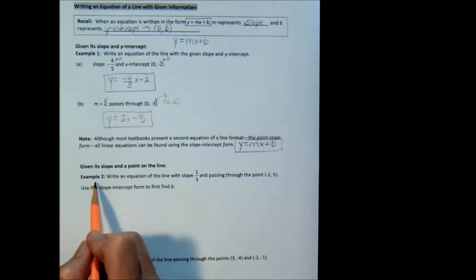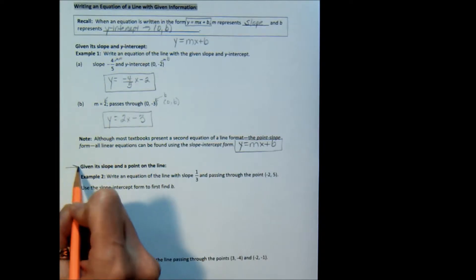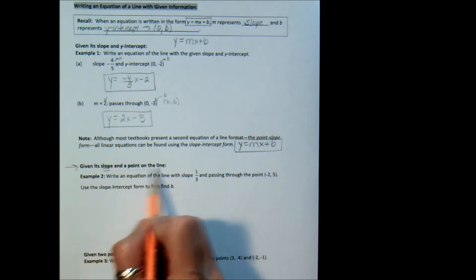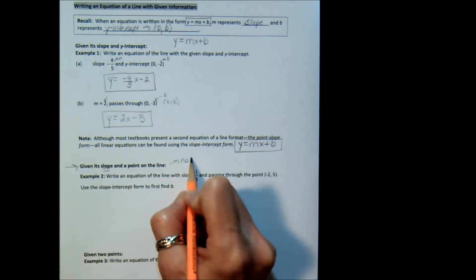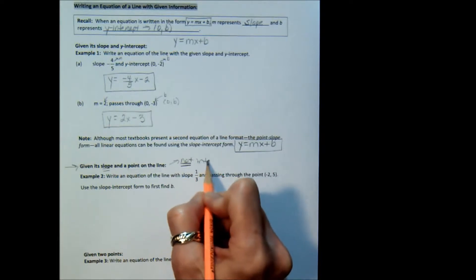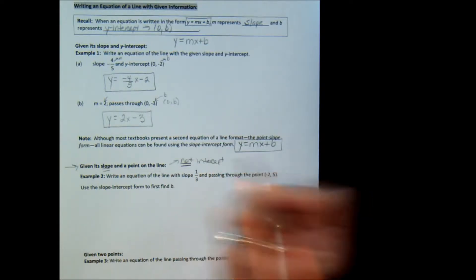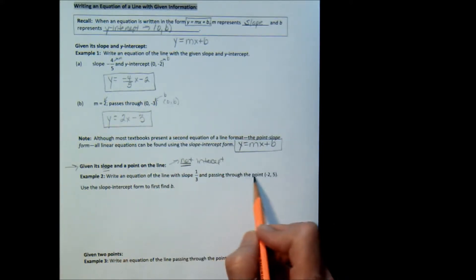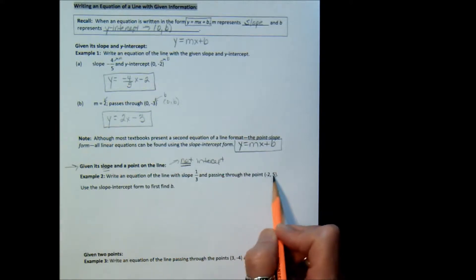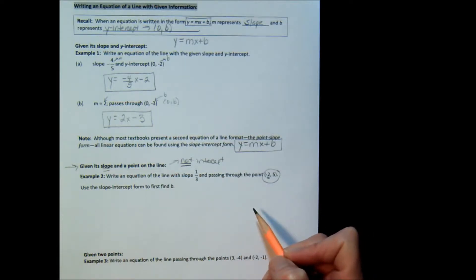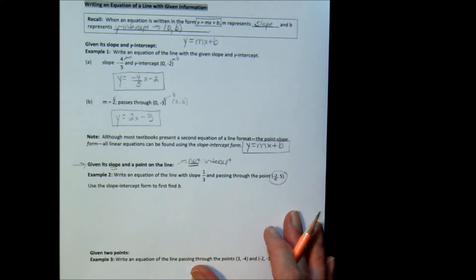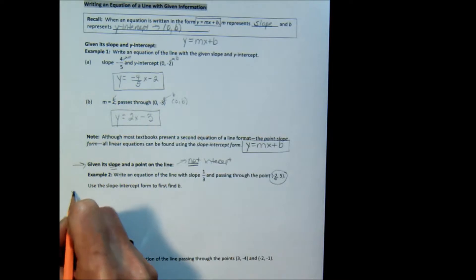Let's look at example 2, where you're given different information. This time, you're given the slope. So we still have that. But instead of the y-intercept, you're given another point on the line. And I'm going to make a note here. It is not the intercept, not the y-intercept point. So the example says, write an equation of the line with slope 1 3rd and passing through the point negative 2, 5. I know this point is not the y-intercept because there's not a 0 in the x spot. So what I want you to do, and this is kind of the procedure you should do each time with one of these.